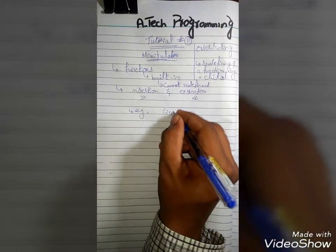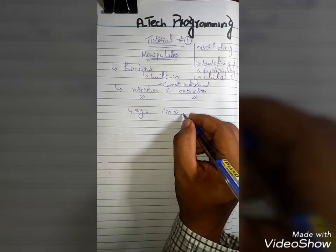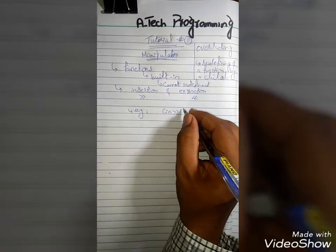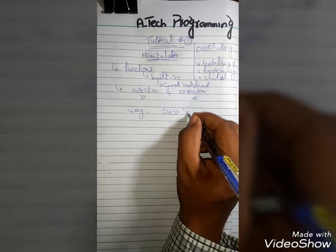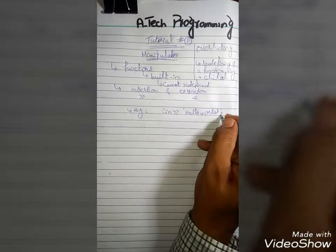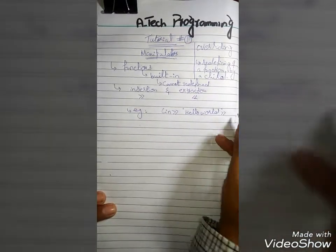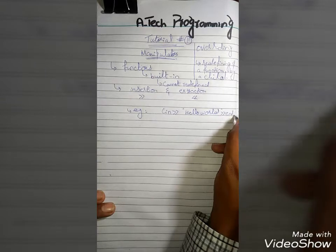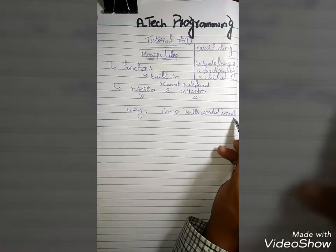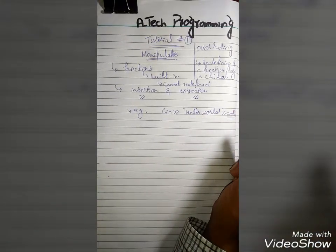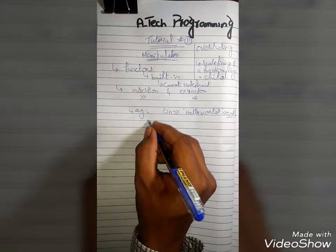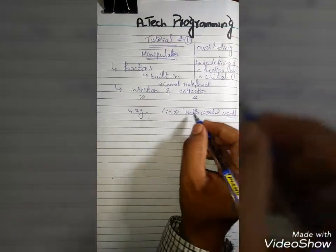For example, if we use the double insertion operator cin and anything after this, just like for output if we use double quotation hello world, and then endl, so this endl is known as the manipulator.